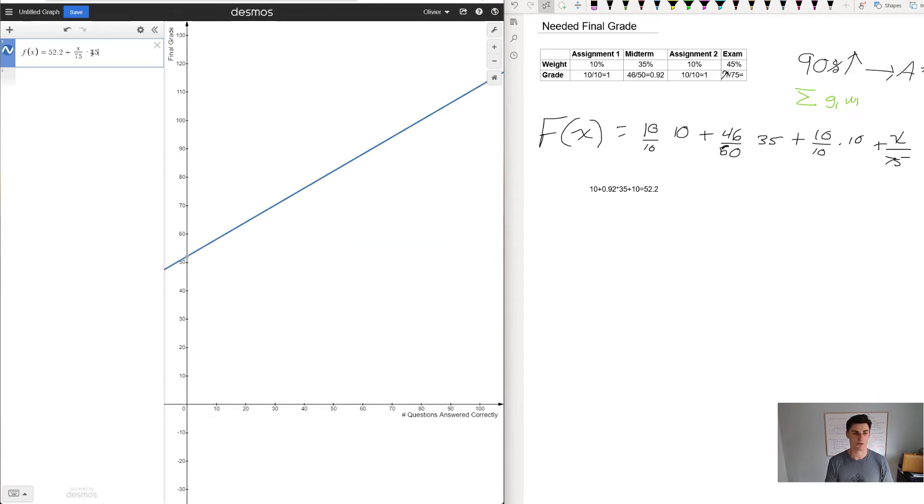We know that x is between zero if I don't answer any correctly and the max is 75 if I get all of them correct. In Desmos we can create sliders, so q naught equals one, it goes in steps of one between zero and 75. Then I can do f at q naught, so that's my grade depending on the slider. If I answer zero questions I get 52, if I answer all of them I get 97.2.